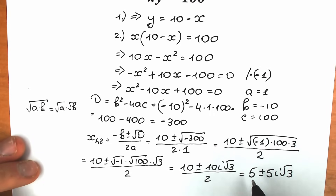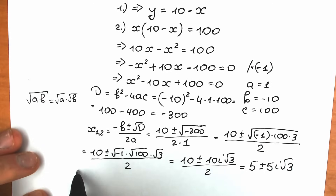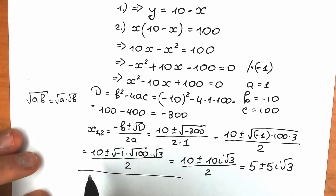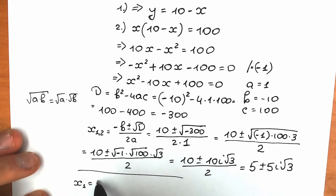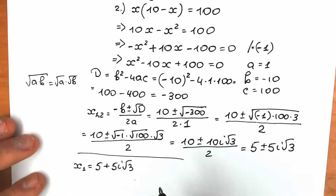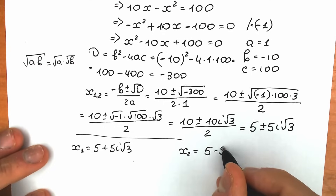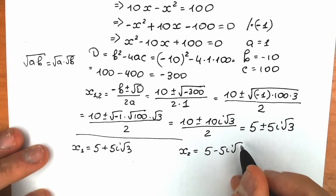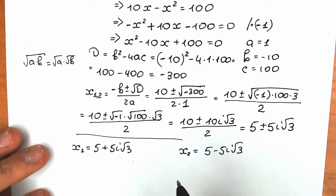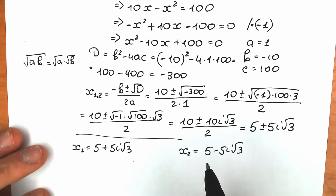So x₁ equals 5 plus 5i square root of 3, and x₂ equals 5 minus 5i square root of 3.